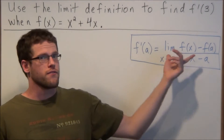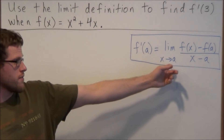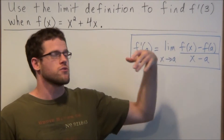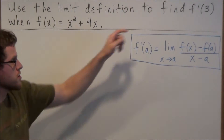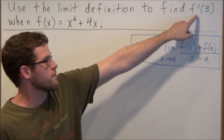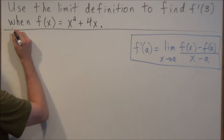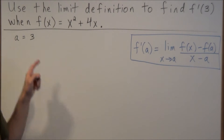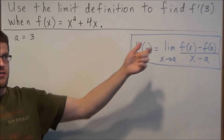We have our limit definition here, and to use this definition properly, we need to identify a and then use that value to find f of a. So for this problem, if we want to find f prime of 3, our a value is equal to 3, and we use this value to find the function value when x is 3.